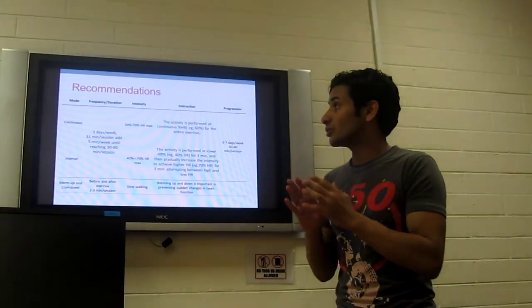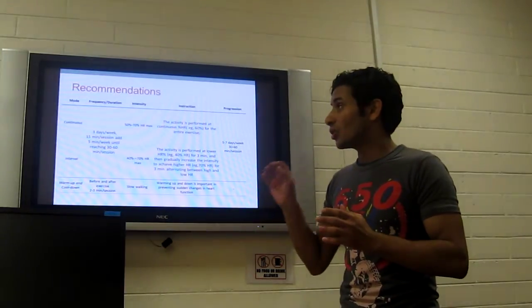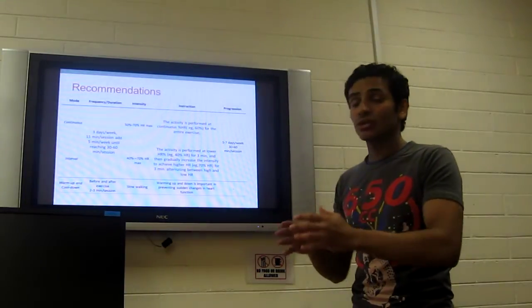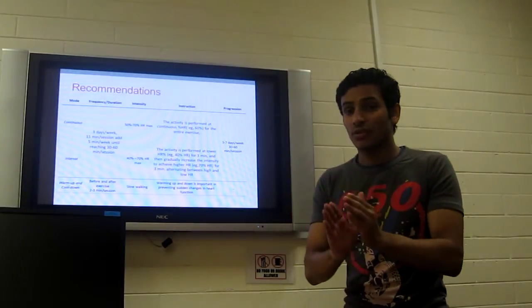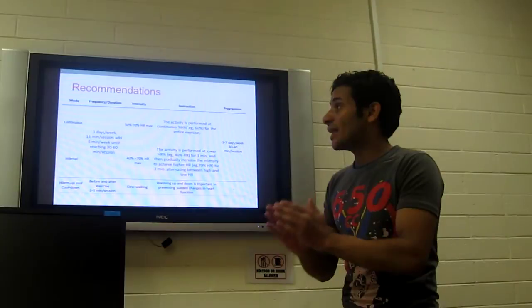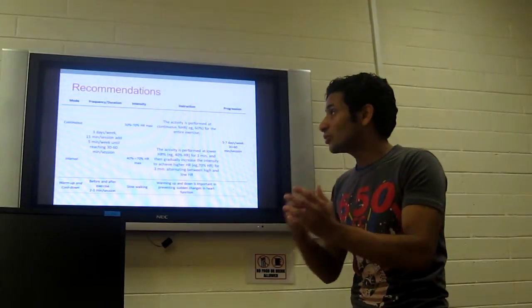So what are the recommendations here? If you want to do continuous training or interval training, the duration or frequency would be three days per week. Start with 15 minutes per session and then add five minutes per week until you reach 30 to 60 minutes per session.